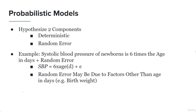Let's talk about probabilistic models. Probabilistic models basically hypothesize two components: deterministic and random error. An example of that would be: the systolic blood pressure of a newborn is six times the age in days plus random error. There is always some sort of error involved in the prediction of a particular variable whenever we're talking about probabilistic methods.